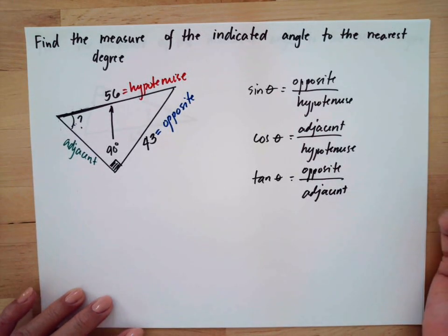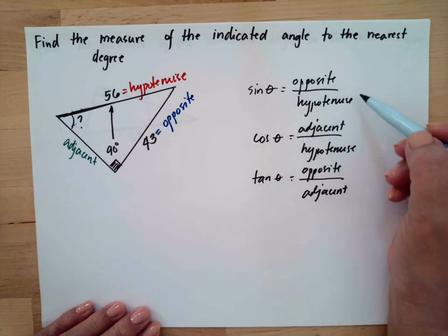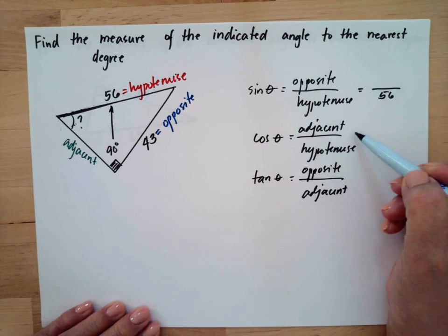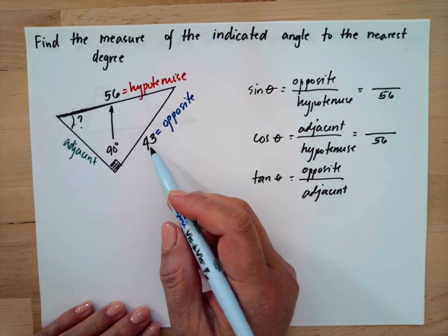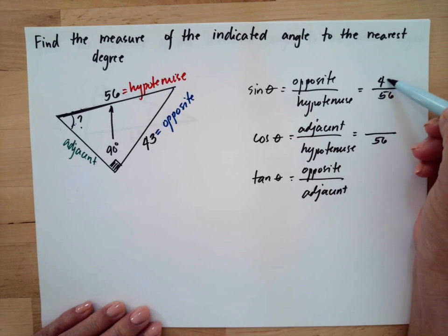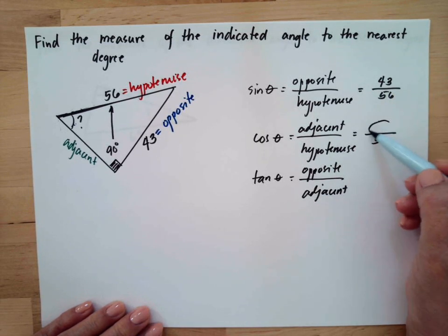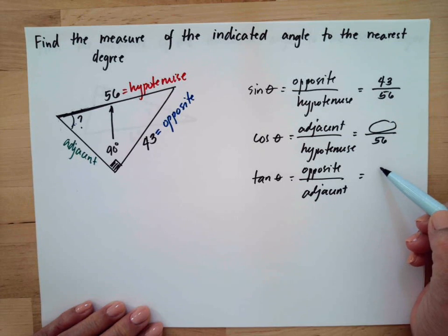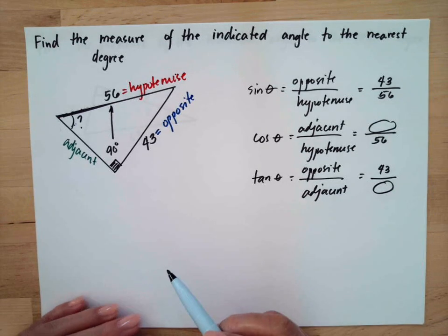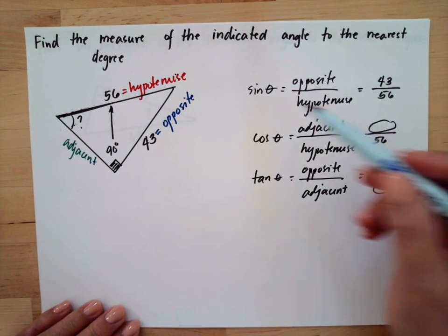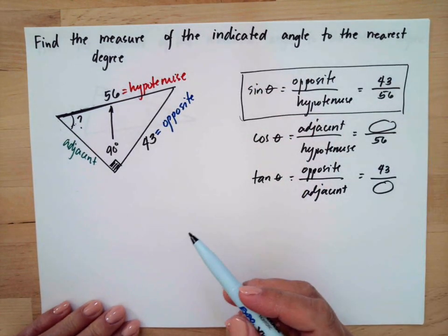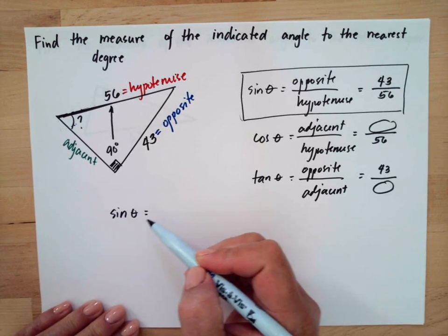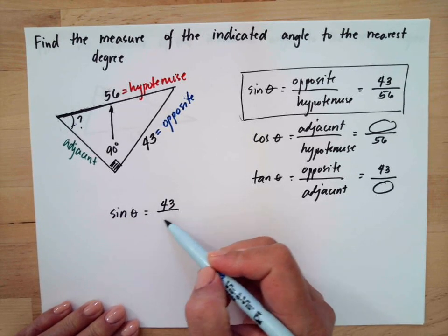Now let's identify the given. We have the hypotenuse which is 56, and the opposite which is 43, while the adjacent is unknown. So we can use the sine function to solve this problem. Sine of the angle equals 43 over 56.